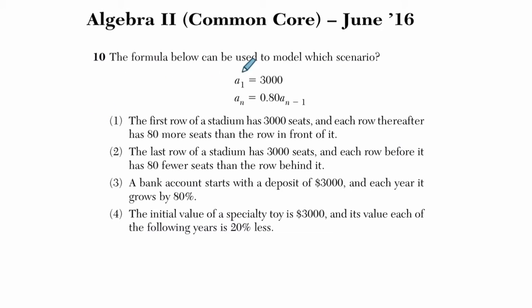We're told that the formula below can be used to model which scenario. Notice this formula tells us that a sub 1 is 3,000, so this is going to be a sequence where the first term is 3,000. Then, we're told any term in the sequence equals 0.8 times the previous term, a sub n minus 1. That's just the one before whatever term you're looking at.